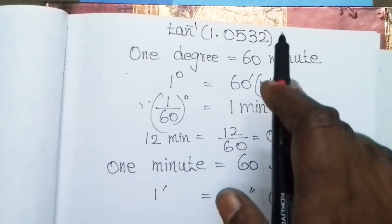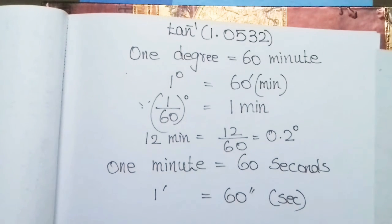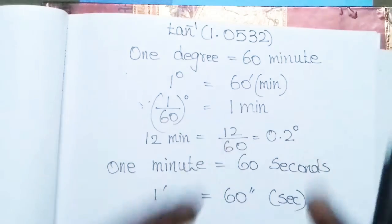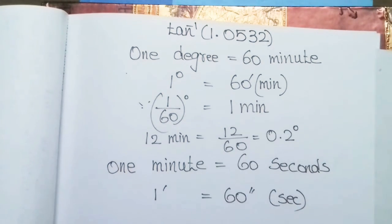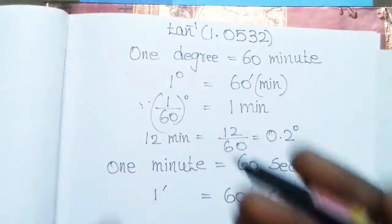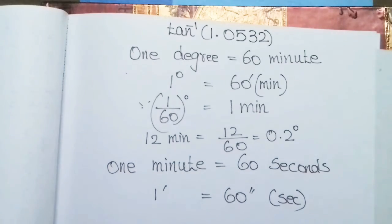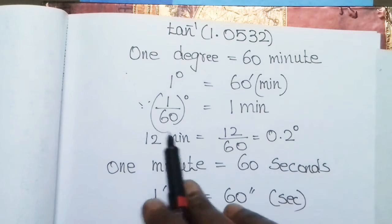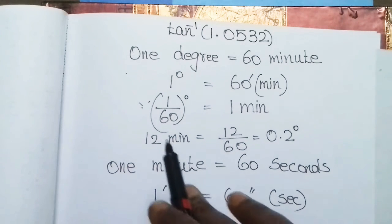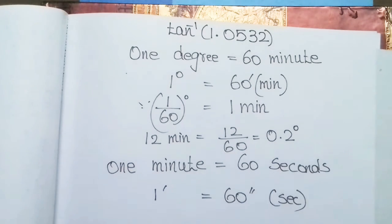Tan inverse of 1.0532 — this is not a scientific calculator. We use the log table to calculate it. So in the log table, you can look up minutes and degrees. When you convert degrees to minutes in the table, the entire value in degrees — so 1 minute = 1/60, and 5 minutes = 5/60 = 0.2 degrees.